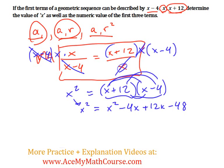Now we just need to solve for x. So let's subtract x squared from both sides of the equation. These just cancel out. We end up with 0 equals negative 4x plus 12x is 8x. We bring down the negative 48.